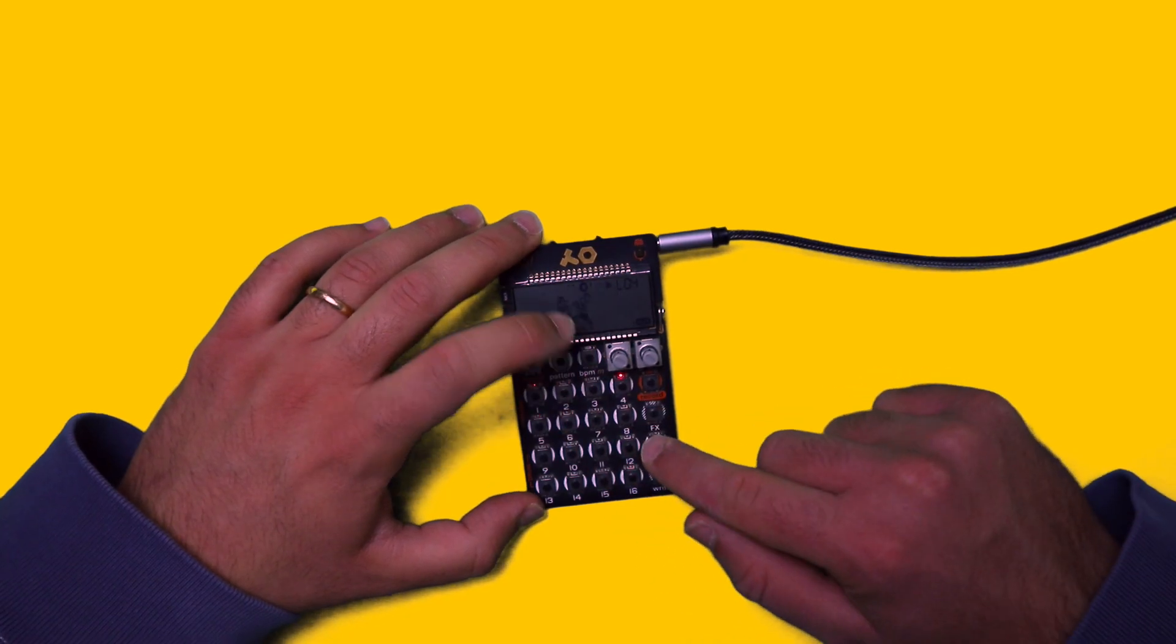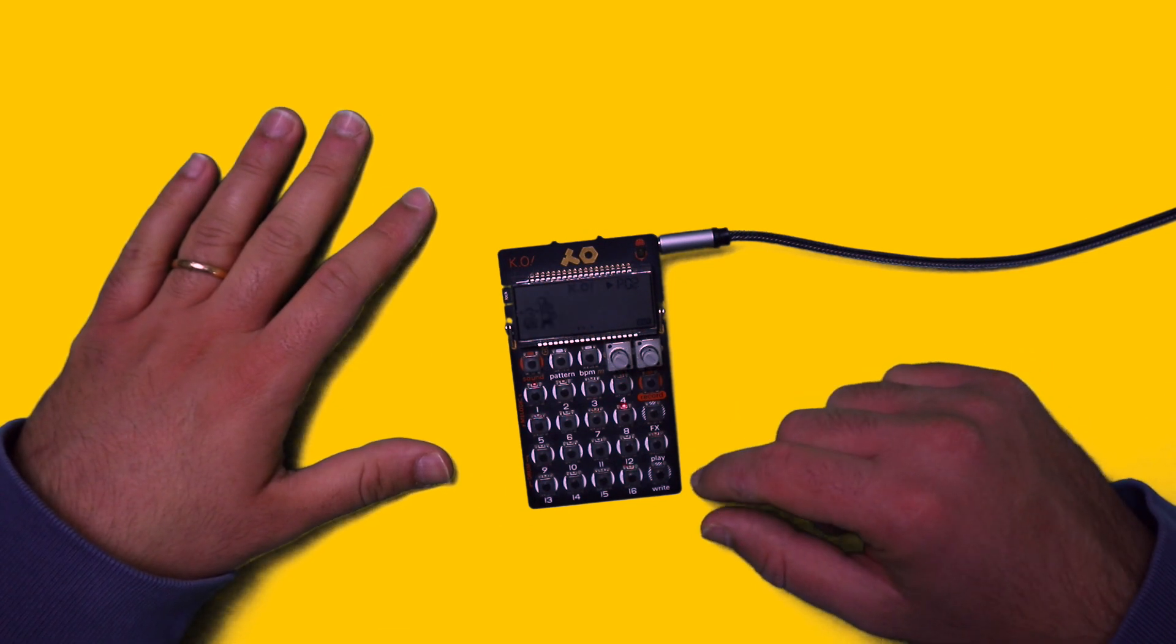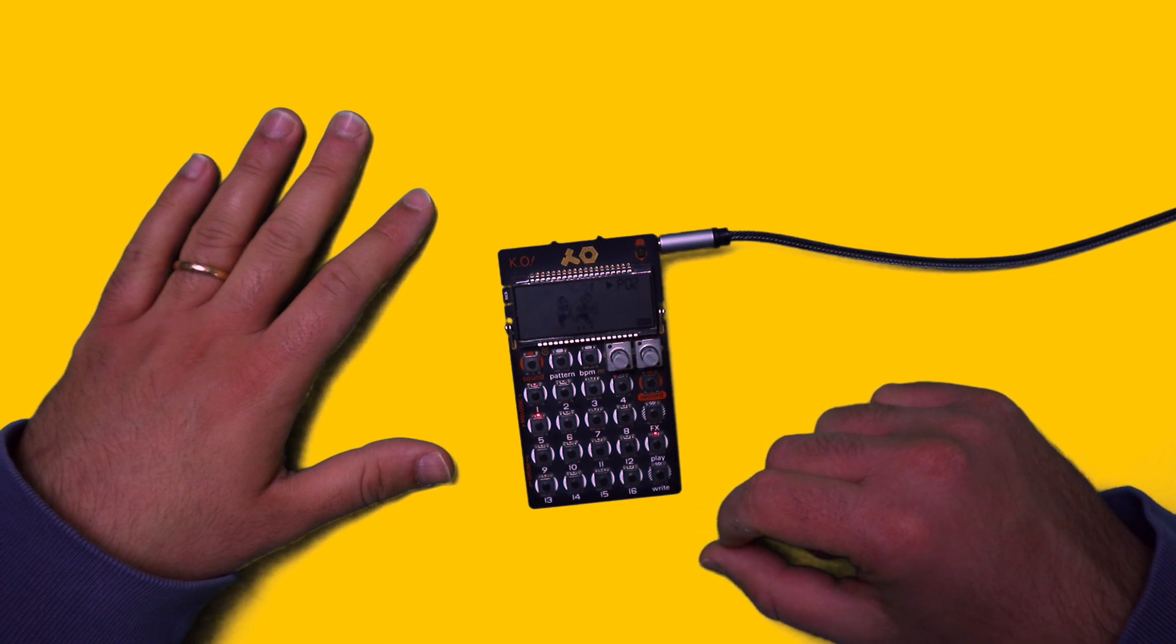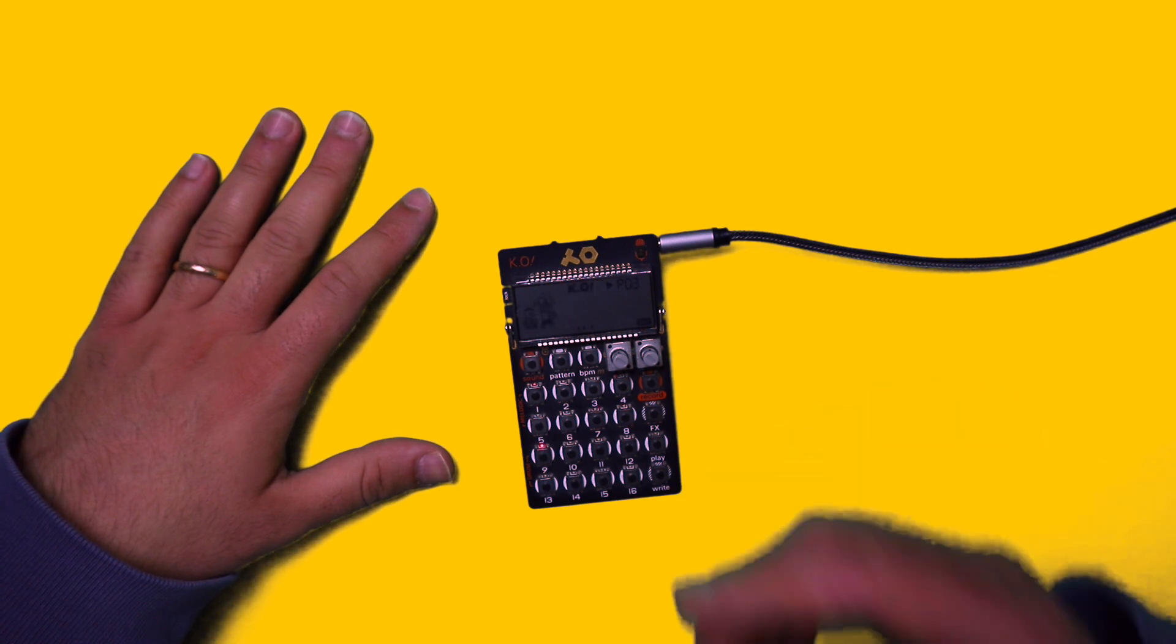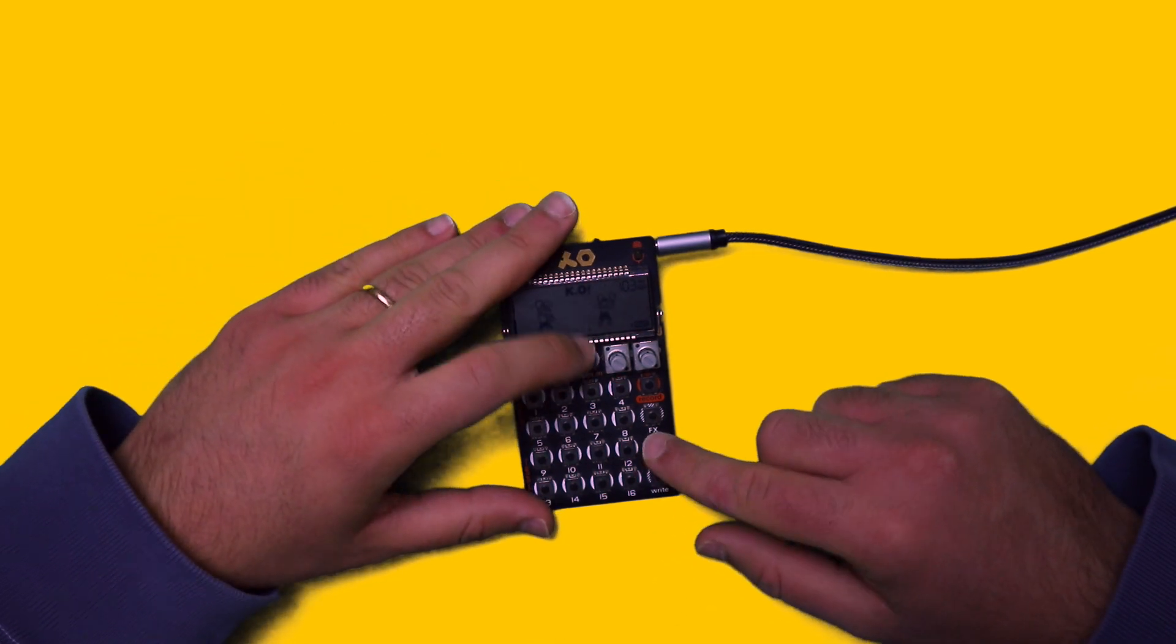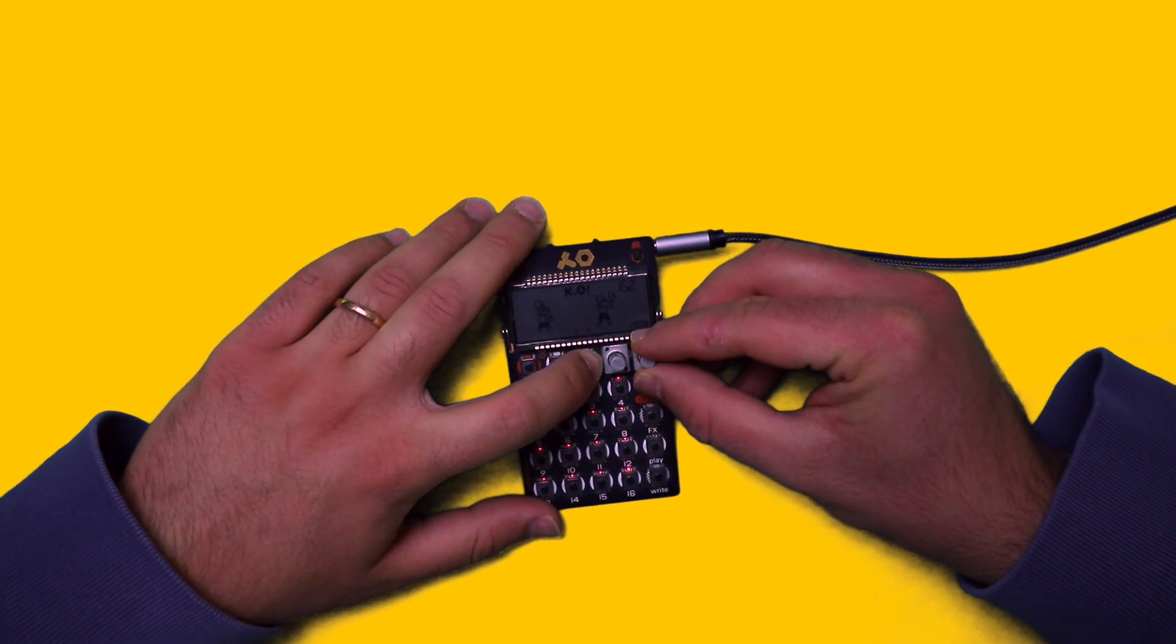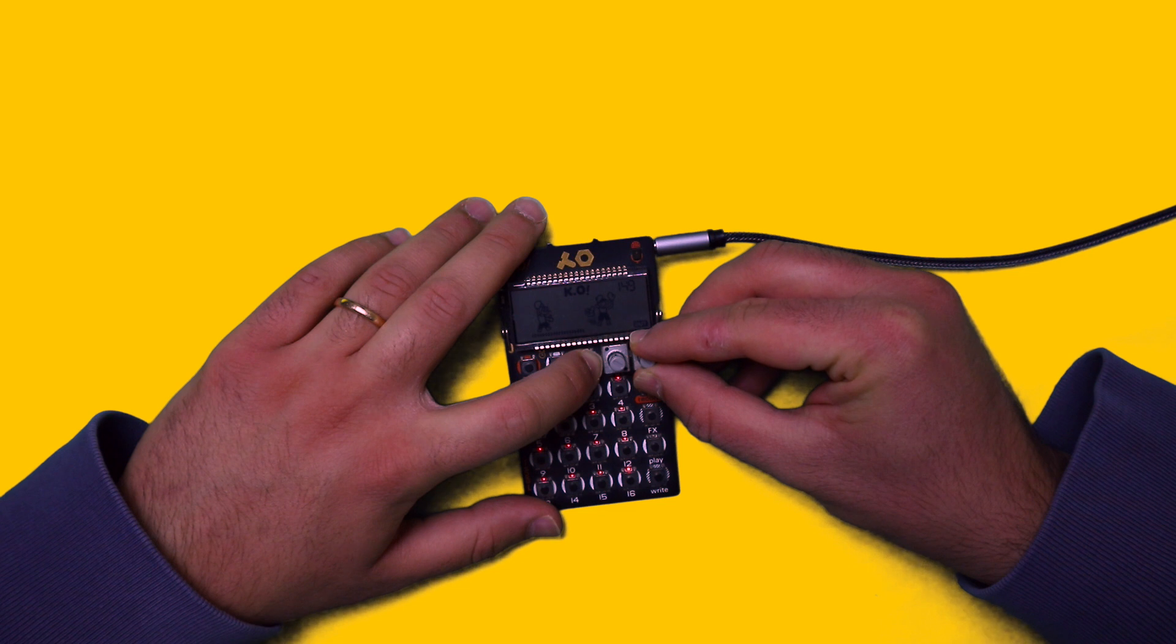The original BPM of Mask Off is 152. However, unfortunately the PO-33 doesn't have time stretch features, so I had to play around with the pitch to find a good compromise between the sample's original tempo and pitch and the final song's tempo and pitch. I ended up with my beat being one semitone up and five BPMs down, compared to the original Mask Off by Future.